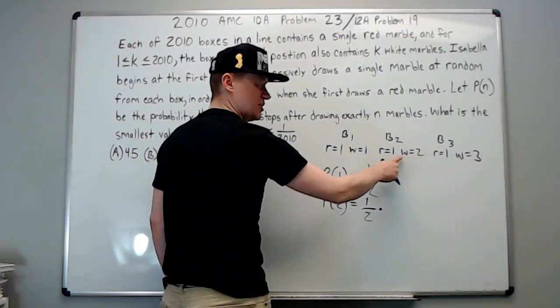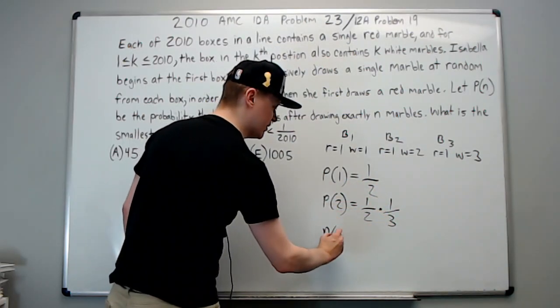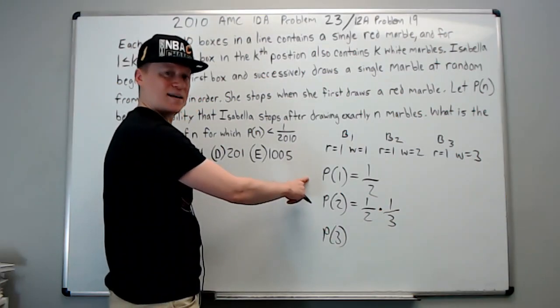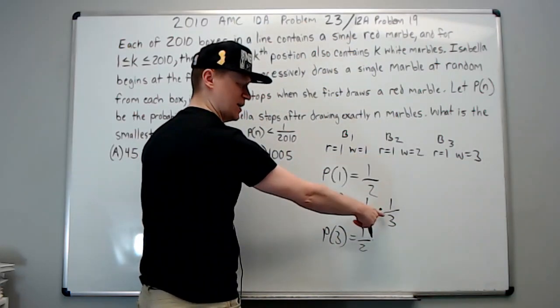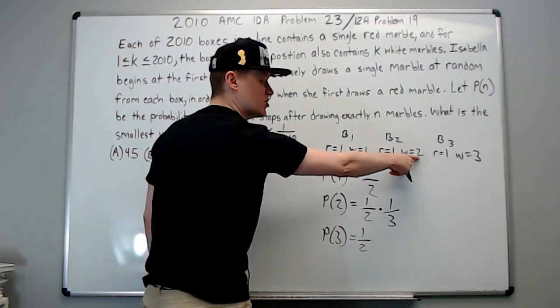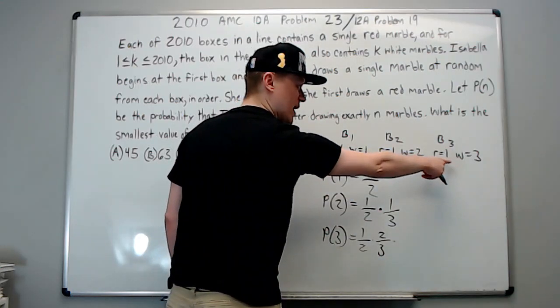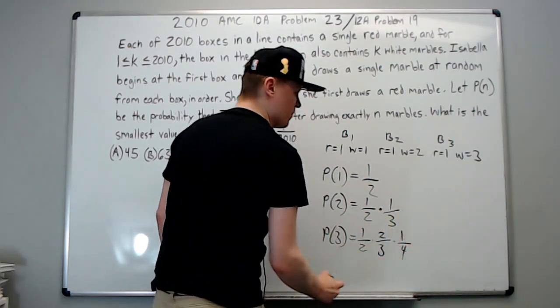Let's look at the probability that she stops on the third box. That means she wins white, white, red. Well, again, white is going to be one out of two, but white on the second box is not one out of three, it's two out of three. And on the third box she gets a red marble, which is one out of the total, which is four. Okay, this is good enough.